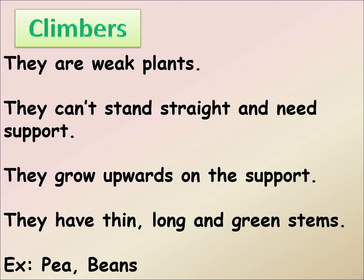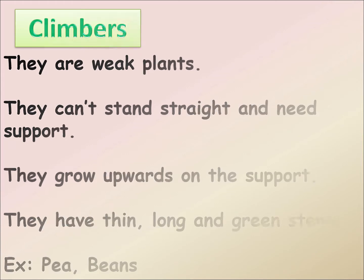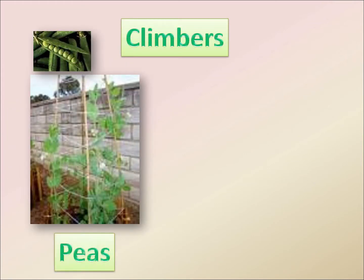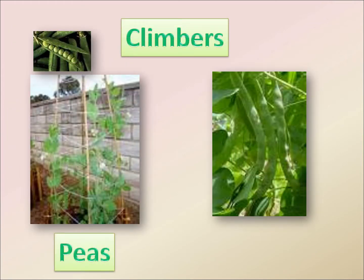Climbers are pea, grapevine, money plant, and bean. In this picture, you can see peas and beans.